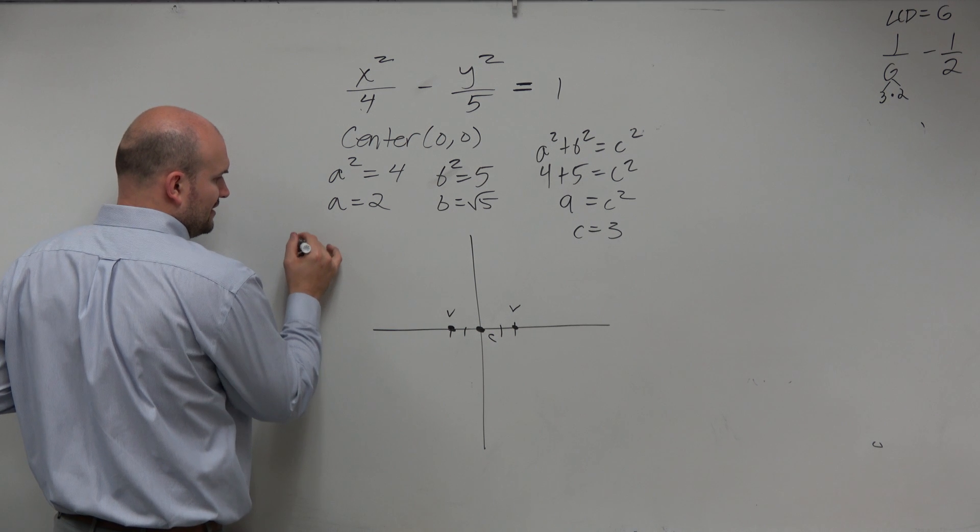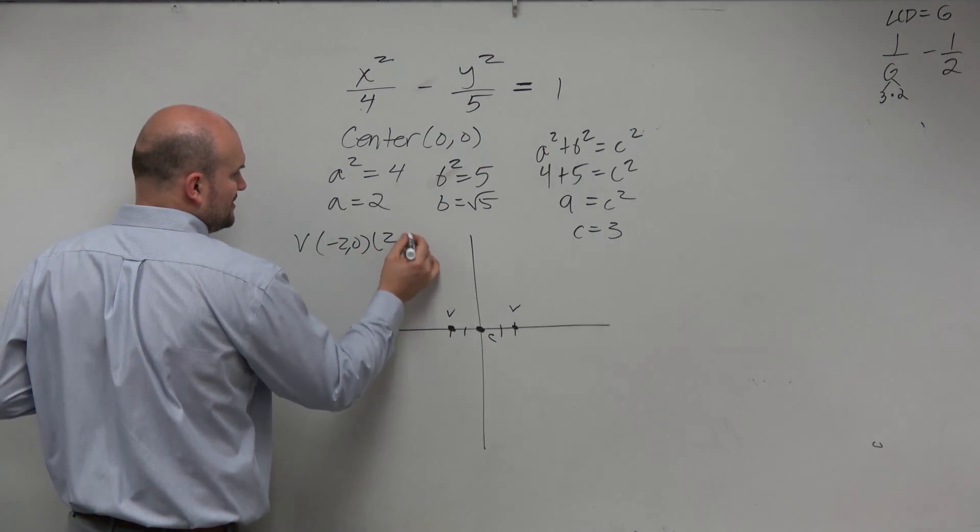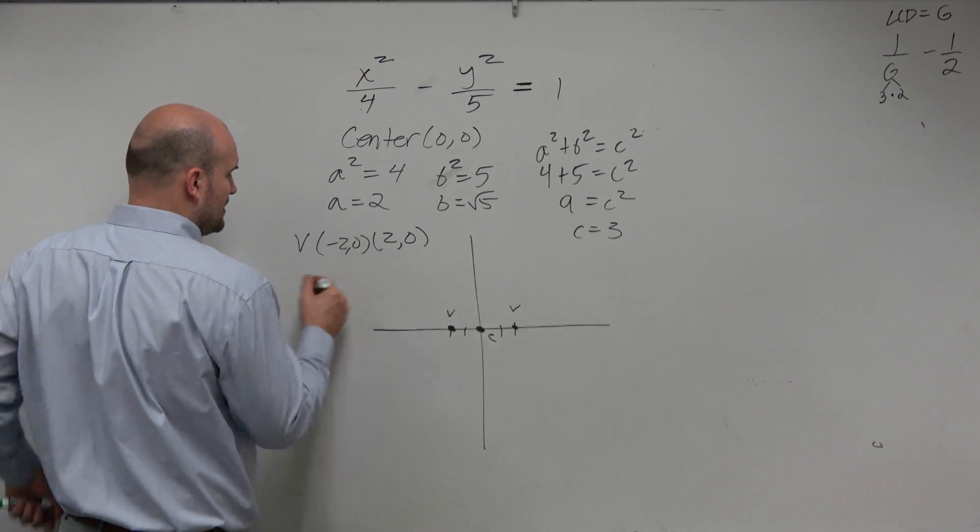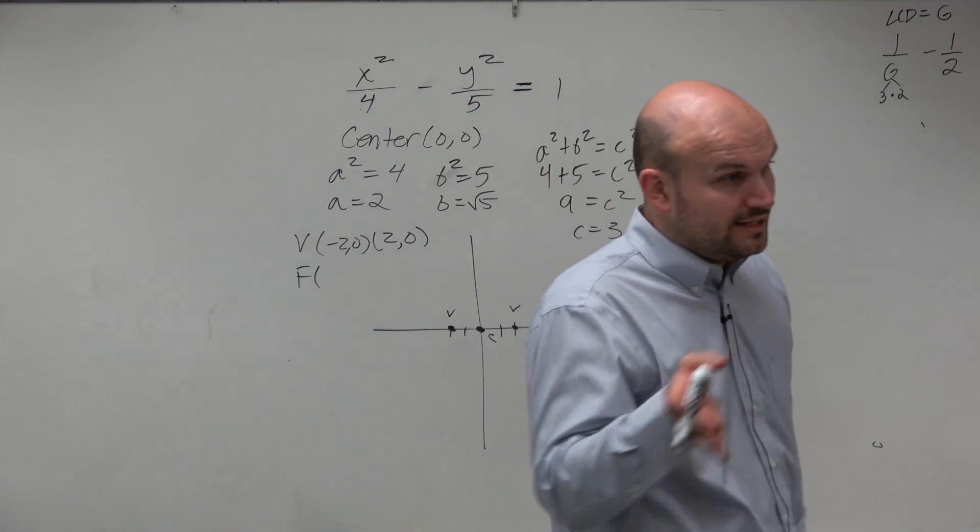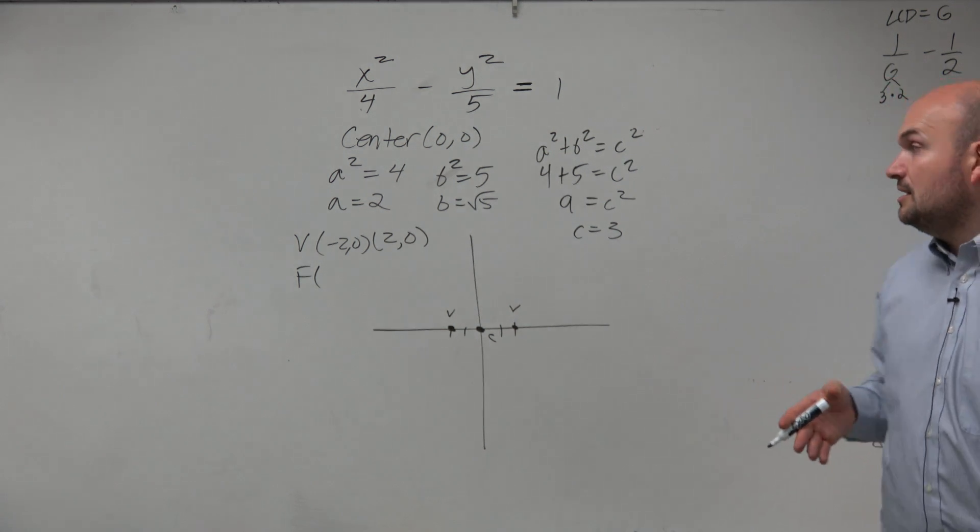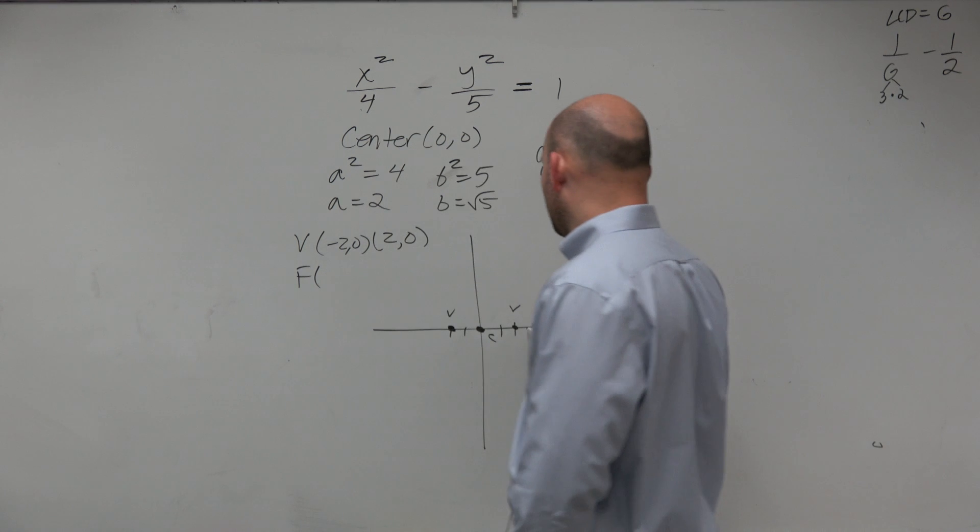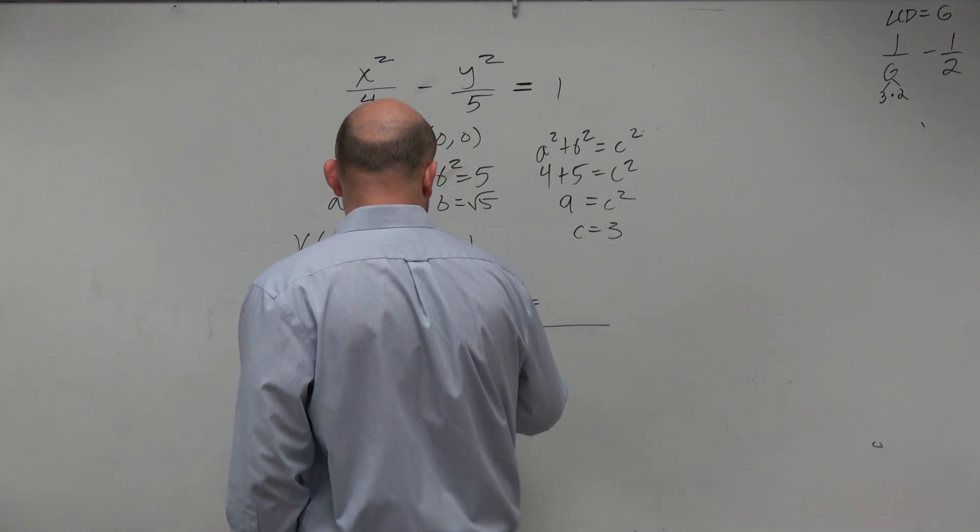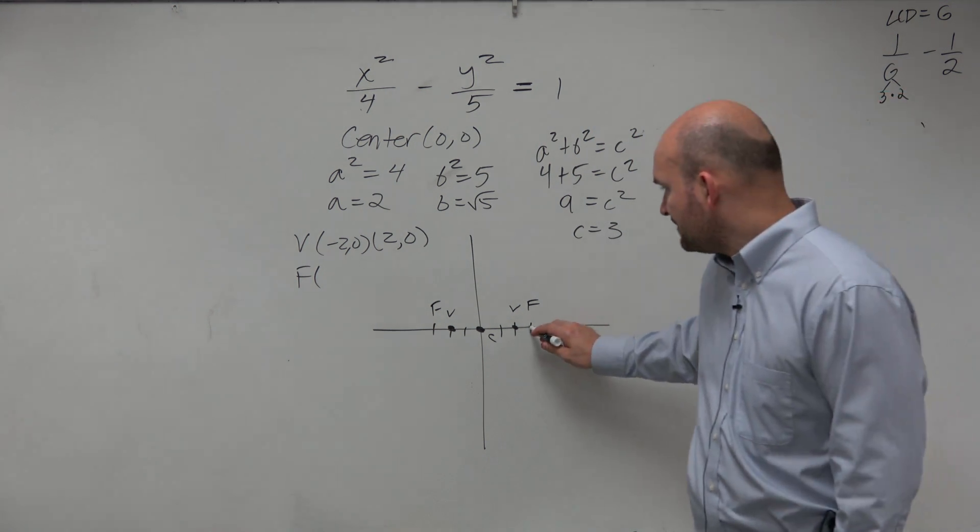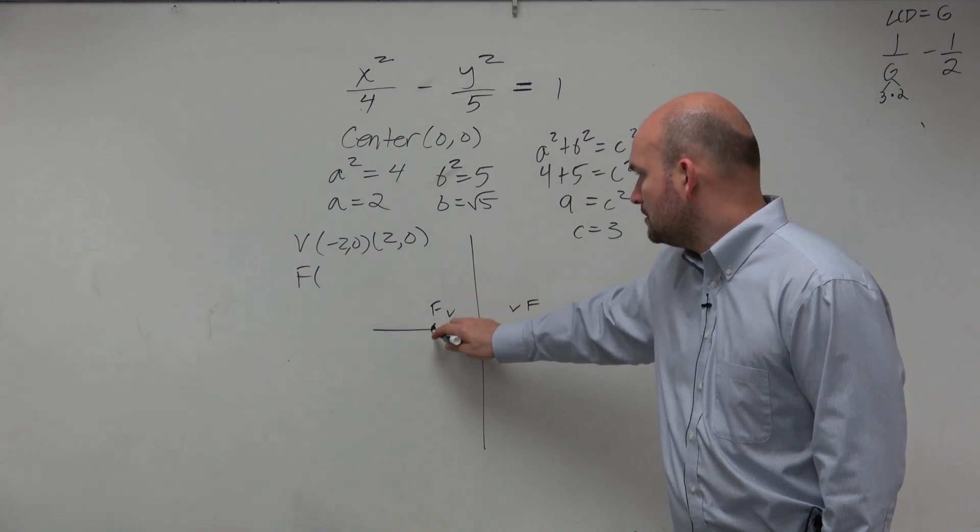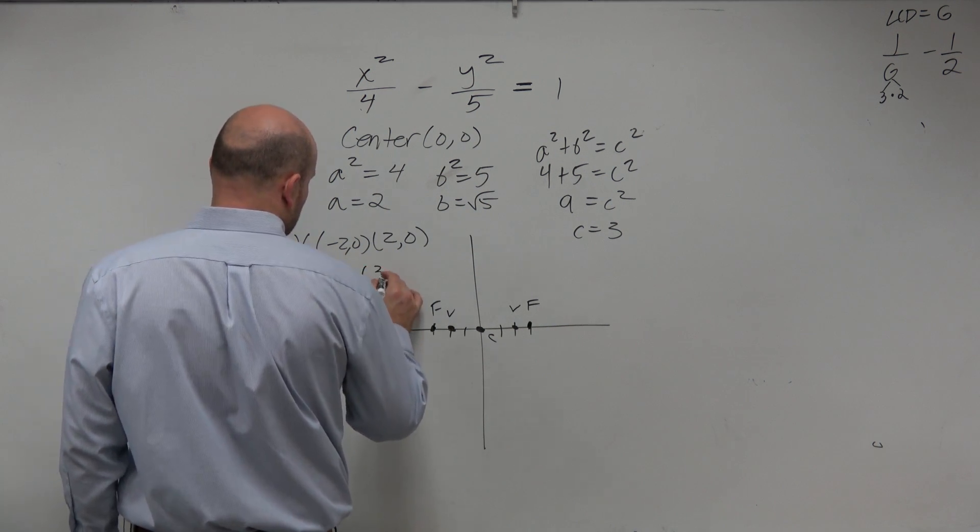So now we can look at our graph here and kind of say, oh, our vertices then are at negative 2, 0 and 2, 0. Now, let's figure out what our foci are. Well, our foci is three units away, right? So the foci is going to be at, is three units to the right and three units to the left. So we have a nice little dot. So I could kind of quickly do that. That's negative 3, 0 and 3, 0.